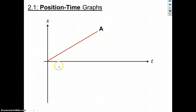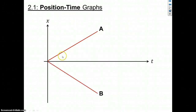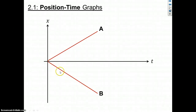We ask what's happening to the slope. For object A, we say it's a straight line, so that means it's a constant slope, and it's positive because it goes up from left to right. So we have a constant positive slope, which means we have a constant positive velocity for A. For object B, there's a constant slope because it's a straight line - it's negative. That constant negative slope means we have a constant negative velocity for object B.